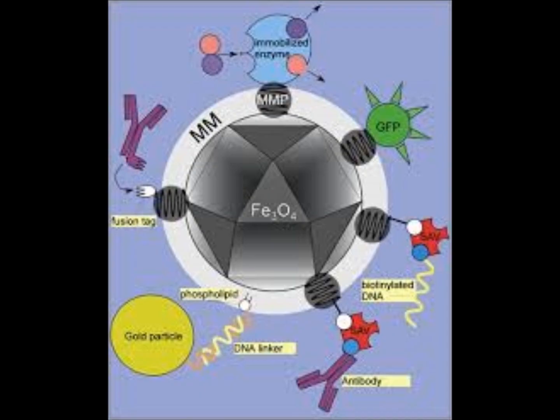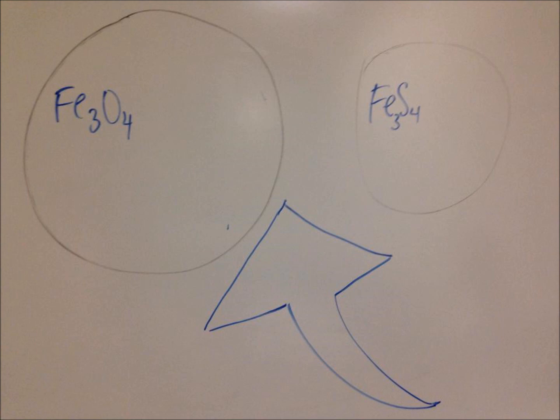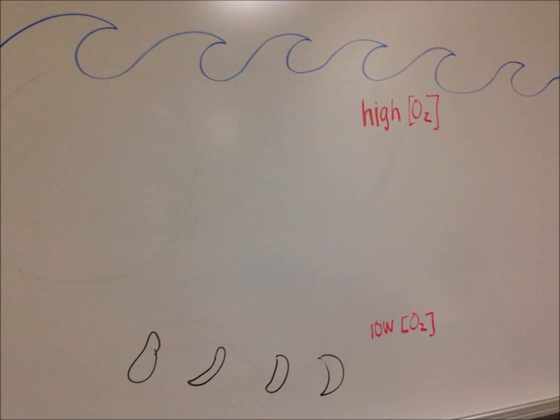Magnetosomes are magnetic storage inclusions that contain iron oxide mineral magnetite. Some magnetotactic bacteria contain sulfur mineral greigite. Magnetosomes are found in several aquatic organisms that grow best at low oxygen concentrations. So far, no magnetosome-containing archaea have been discovered.